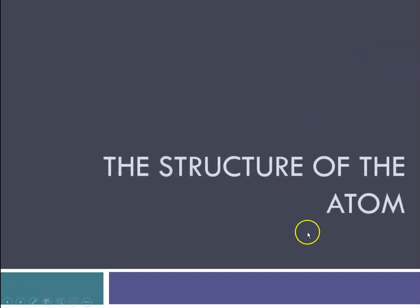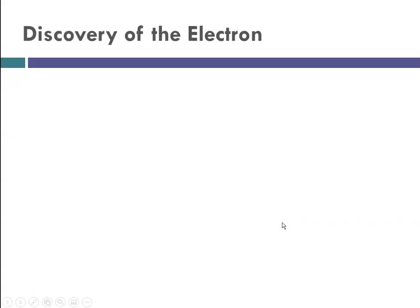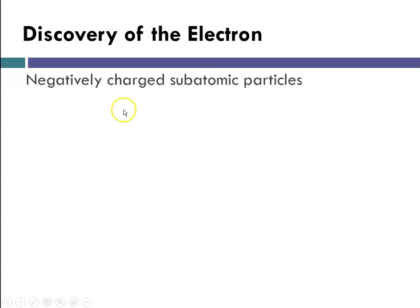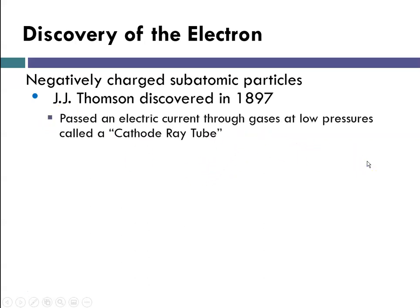Hello class, this is Miss Augustine and today we're going to talk about the structure of the atom and the development of atomic models. We're going to talk about the discovery of the electron. Electrons are the negatively charged subatomic particles, and they were discovered by JJ Thomson in 1897. What he did was he passed an electric current through gases in something called a cathode ray tube.